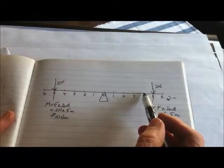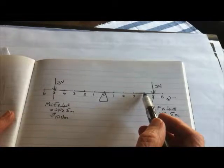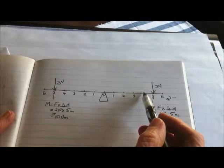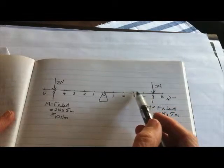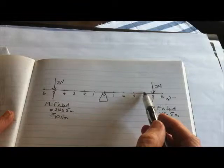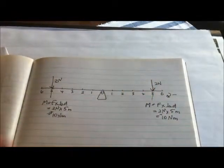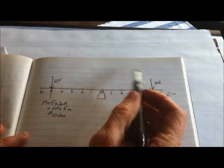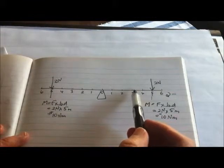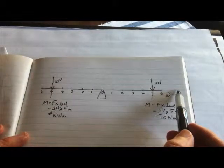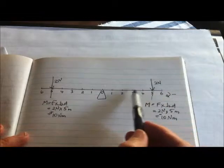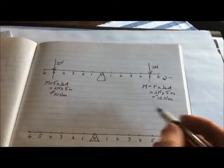What would happen if this person moves in on the seesaw? From your experience, or by working it out from moments: if that person moved in, the perpendicular distance becomes smaller, so the overall moment due to this downward force would be smaller. The moment in the negative direction would be less than the moment in the positive direction, so this side would go up and this person would go down. Moving in on a seesaw makes your side go up; moving out makes your side go down because going out increases your moment.